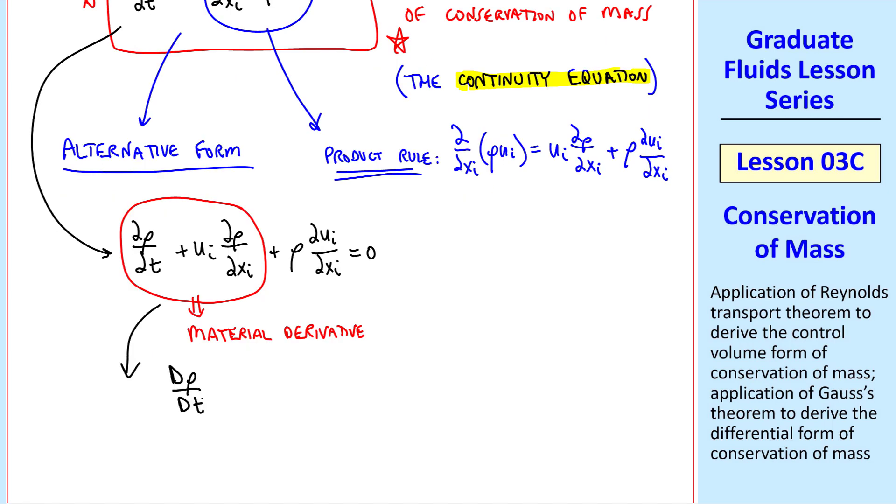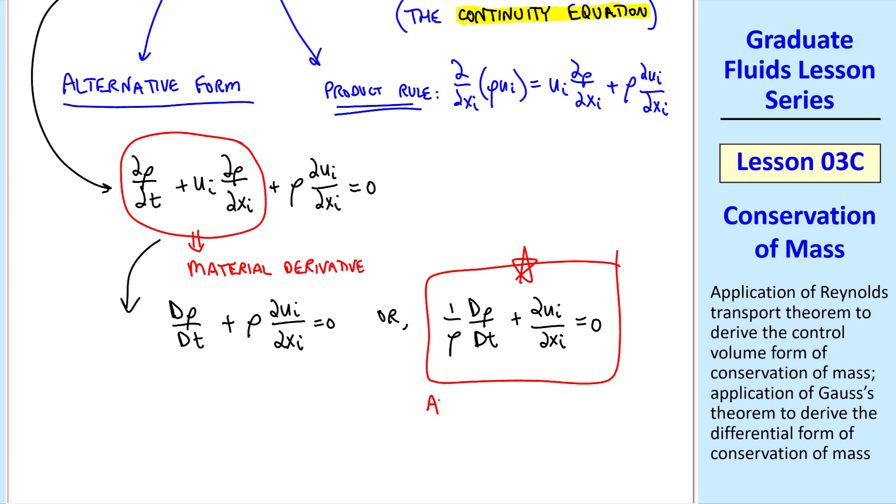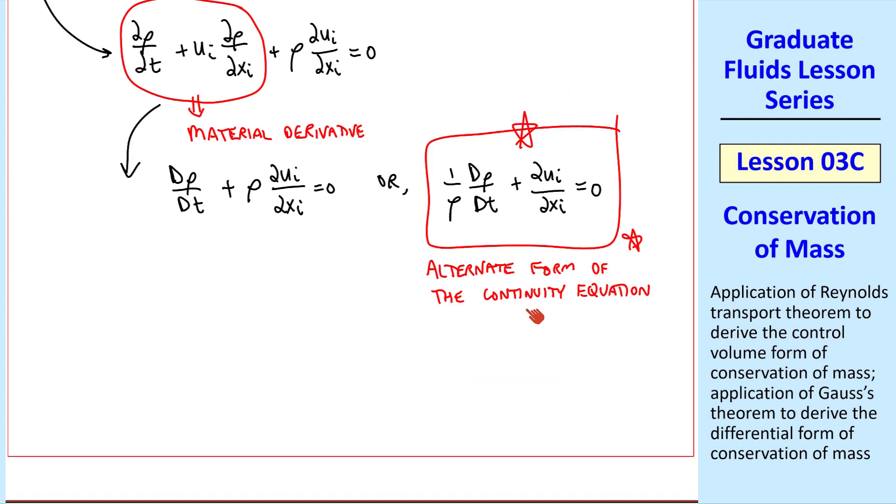Therefore, this equation becomes d rho dt using capital D as the material derivative plus the second term equals 0, or dividing by rho, 1 over rho d rho dt plus del ui del xi equals 0. This is an alternate form of the continuity equation. I like this form of the equation because we can learn a lot just by looking at it. Material derivative d rho dt represents the total change of density as it moves along in the flow.